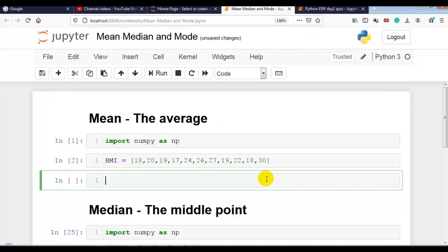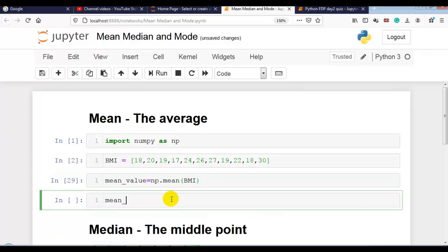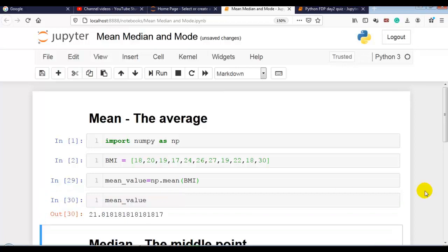Now let me first find mean value, the average value. Mean value is equal to np.mean then bmi. Mean value. Now you can see.